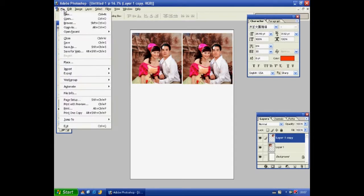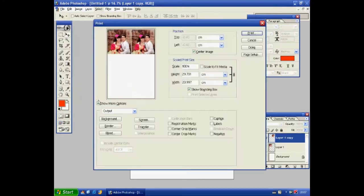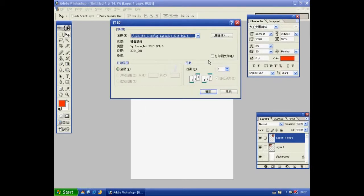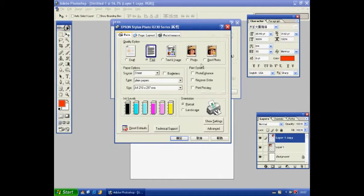After we design the picture, click the file and choose Print Preview. Click Print and select the right printer. Choose the best photo. The paper type is Epson photo quality inkjet.